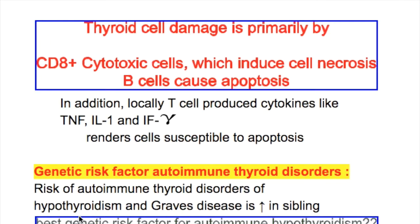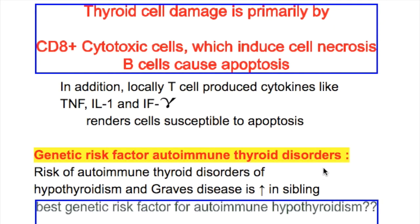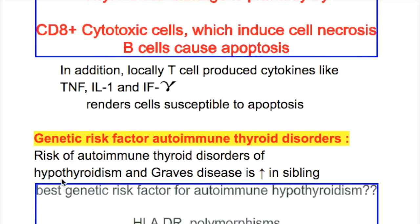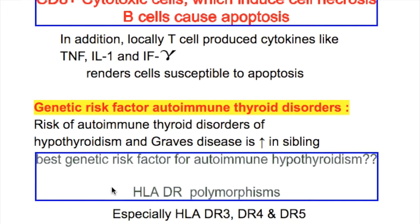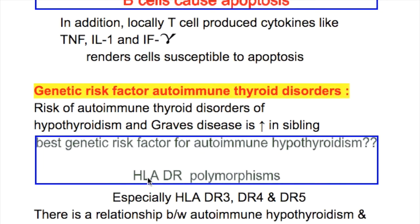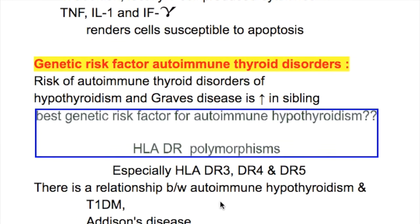What are the genetic risk factors for autoimmune thyroid disorder? Risk of autoimmune thyroid disorders — both hypothyroidism and hyperthyroidism — increases in siblings. The best genetic marker for autoimmune hypothyroidism is HLA-DR polymorphism, especially HLA-DR3, DR4, and DR5.